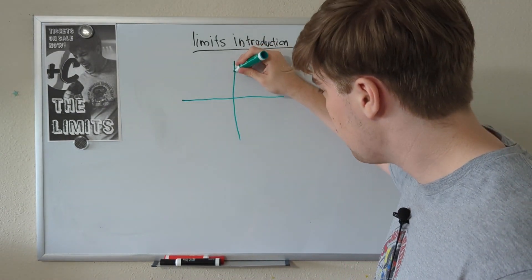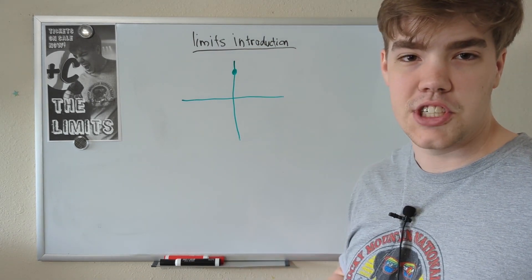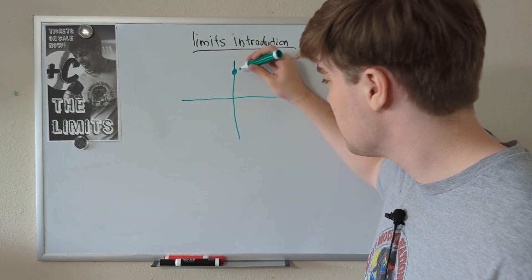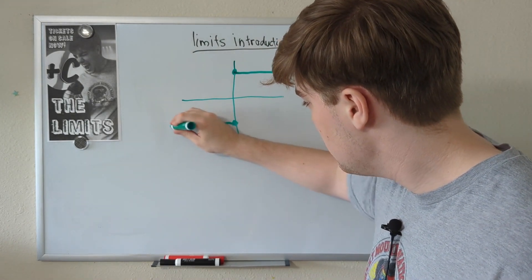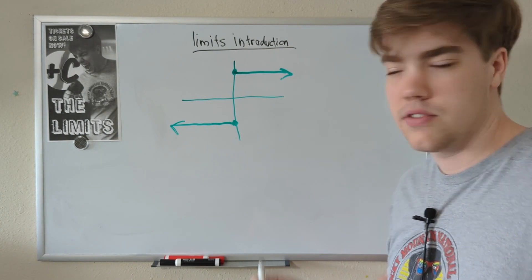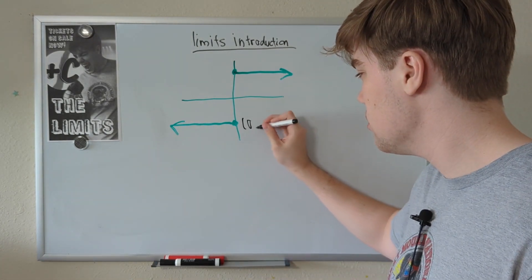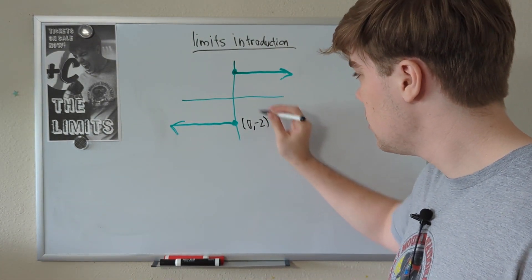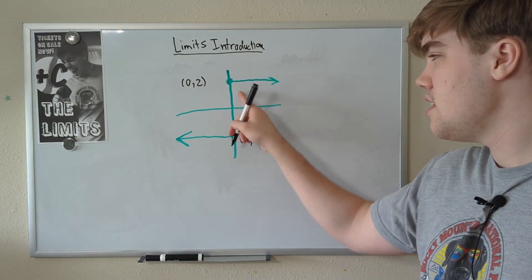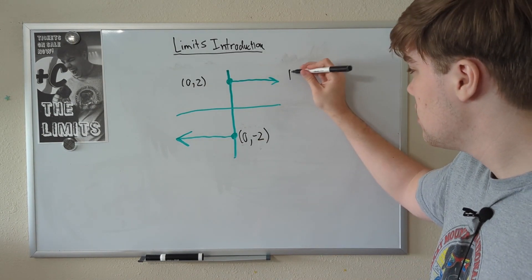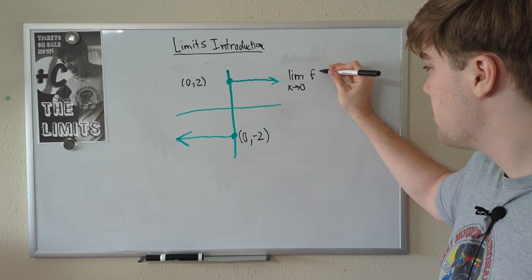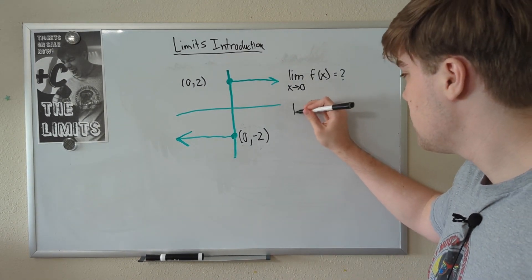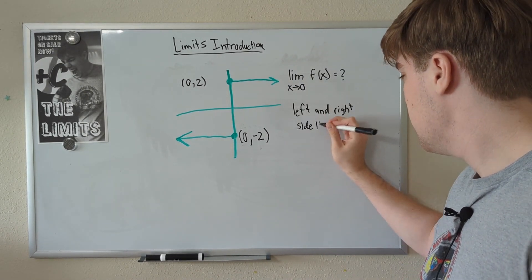So this graph is a piecewise function. Remember, a piecewise function is two functions kind of smushed together. So in this example, we have this, and we have this. And there's two points of interest for us. We have the point down here, 0, negative 2, and the point up here, 0, 2. Both of these functions are extending to negative infinity and infinity, respectively. What is the limit as x approaches 0 of our piecewise function here?